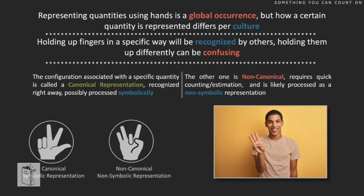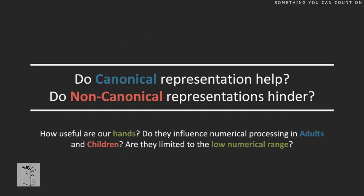Non-canonical hand configurations, on the other hand, would require counting or estimation — more of a non-symbolic representation. Since it's the same stimulus you can do interesting experiments. We want to know if canonical configurations help, whether non-canonical ones hinder, and how useful hands are for learning symbols. We want to understand how they influence numerical processing in both adults and children, and whether the effect is limited to the small range — since you only need one hand for up to four or five. Whether the second hand introduces something different is a question for another time.